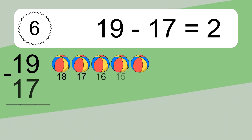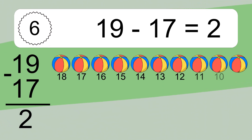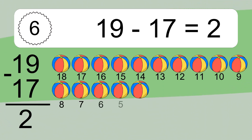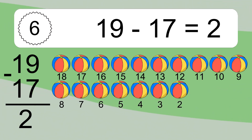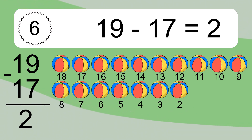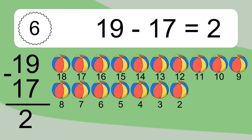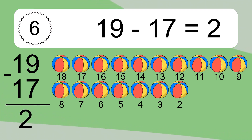19 minus 17 equals 2. Let's count it. 18, 17, 16, 15, 14, 13, 12, 11, 10, 9, 8, 7, 6, 5, 4, 3, 2.